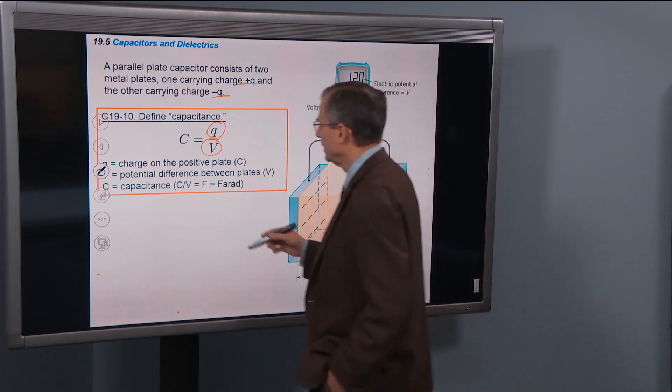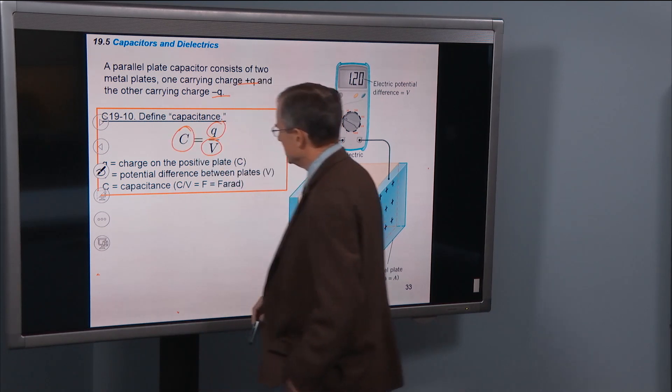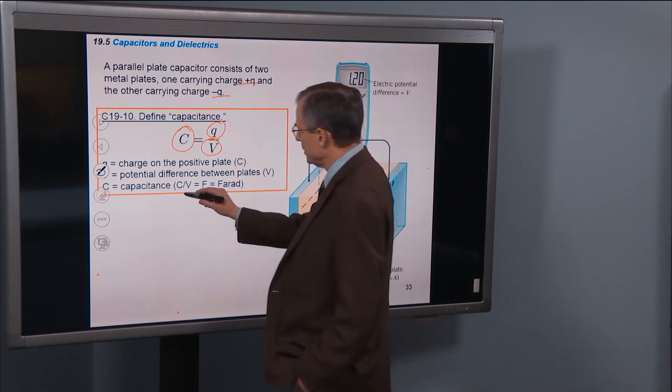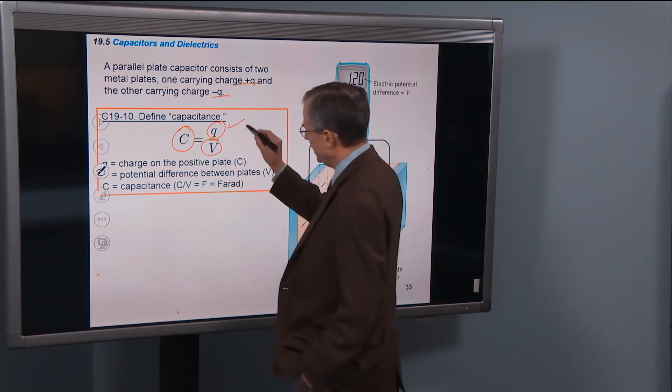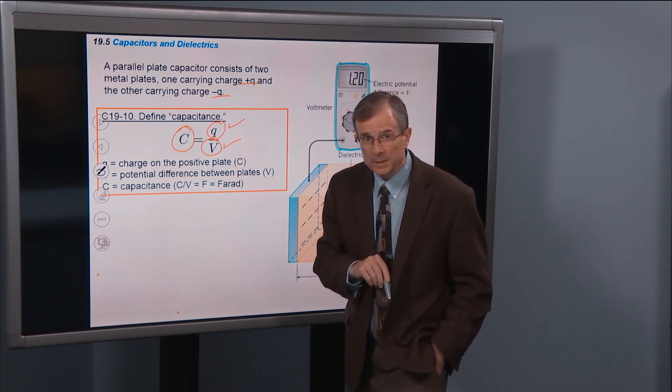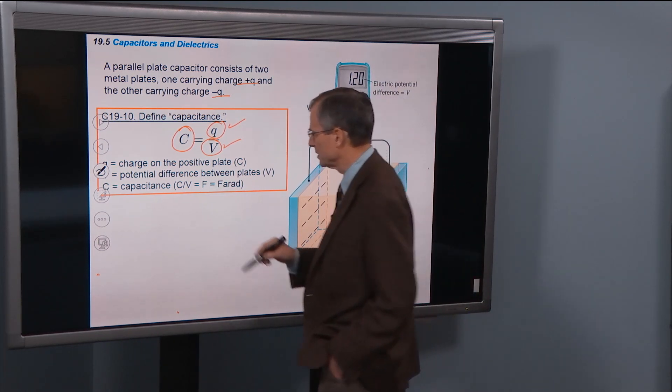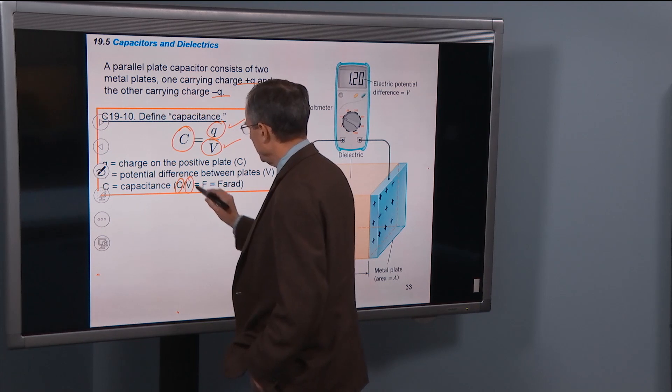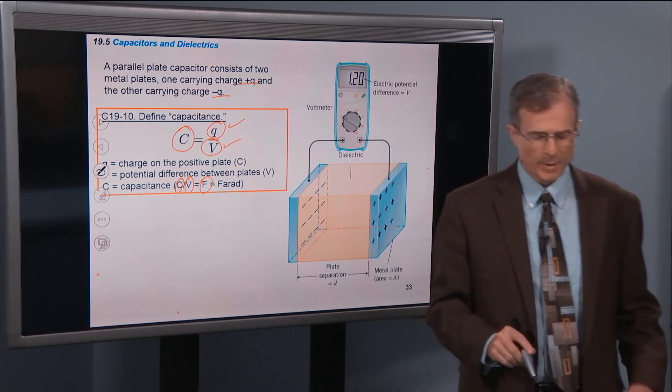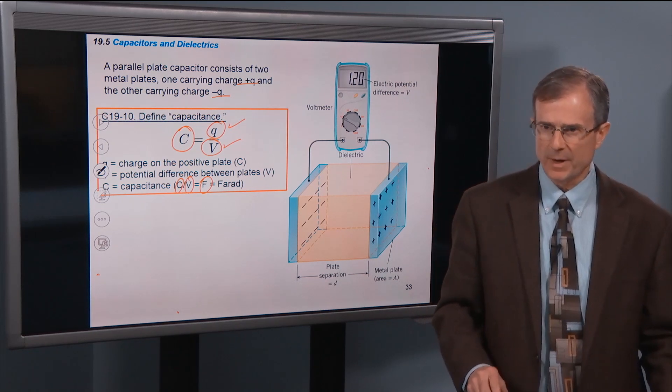And then finally, the capacitance C is measured in units of, charge is measured in Coulombs. Electric potential difference is measured in volts. So that's Coulombs per volt equals what's known as a farad. Capacitances are measured in farads.